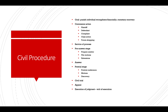Finally, you get to the trial, and if you're not happy with the outcome, you can appeal. After all the appeals have run out, there's an execution of judgment — a writ of execution that provides for the financial recovery in the lawsuit.